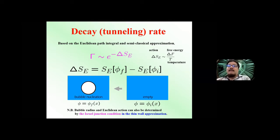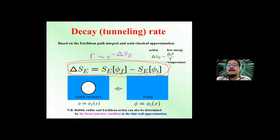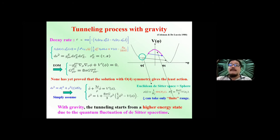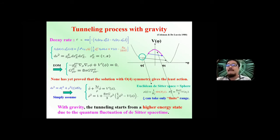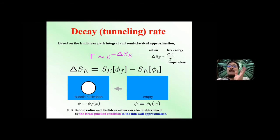To summarize: in order to estimate the tunneling rate, we only need to estimate the Euclidean action and find the bouncing solution connecting false vacuum to true vacuum. In the case of O(4) symmetry, the partial differential equation can be cast into ordinary differential equations, which can at least be solved numerically. Without such symmetries, it is extremely difficult to solve the partial differential equation with adequate boundary conditions. So now let's consider another method to estimate the tunneling rate — not finding the bouncing solution directly. In fact, bubble radius and Euclidean action can also be determined using the Israel junction condition in the thin-wall approximation limit.